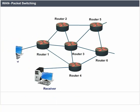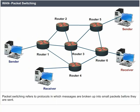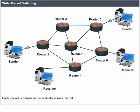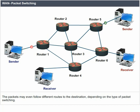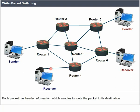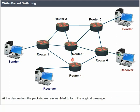WAN Packet Switching. Packet switching refers to protocols in which messages are broken up into small packets before they are sent. Each packet is transmitted individually across the network. The packets may follow different routes to the destination depending on the type of packet switching. Each packet has header information that enables routing to its destination. At the destination, the packets are reassembled to form the original message.